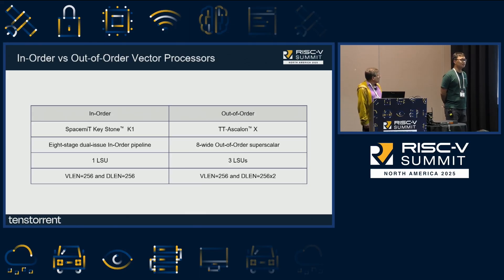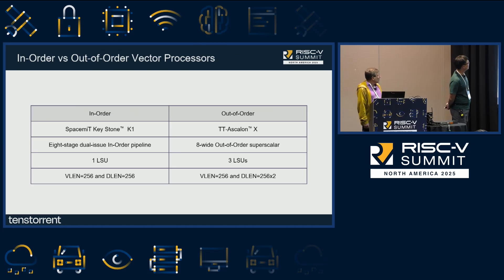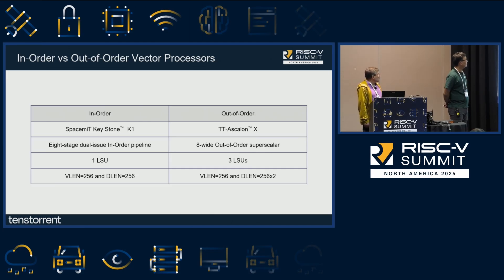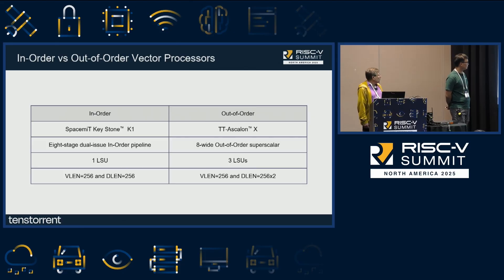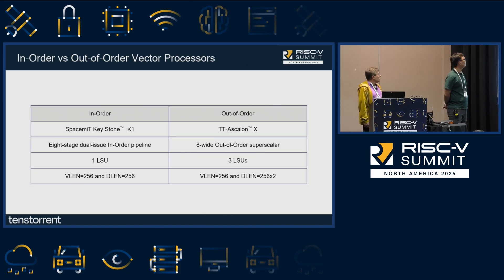In this experiment, I picked two designs that I have my hands with: the space-time K1, and also the Ascolon design from TenStorrent. The Ascolon design is out-of-order with a VLEN of 256, where we have two pipes of a vector pipe with a VLEN of 256 as well. We think this is a comparable design, although the performance doesn't really matter.